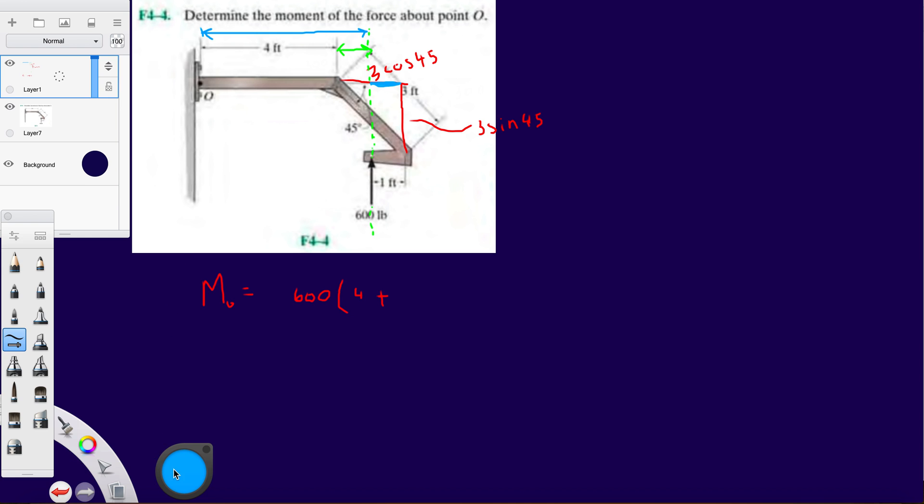And this part is going to be 3 cos 45 minus that blue which is just 1. And that gives you that little red distance.